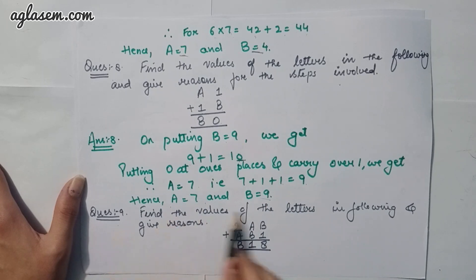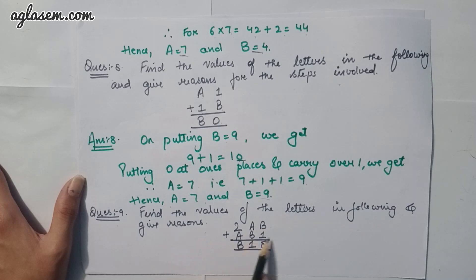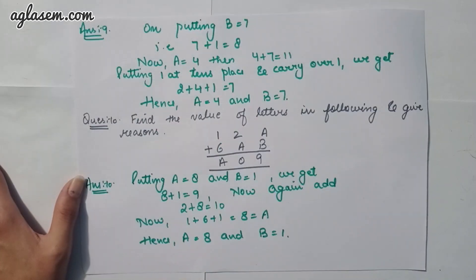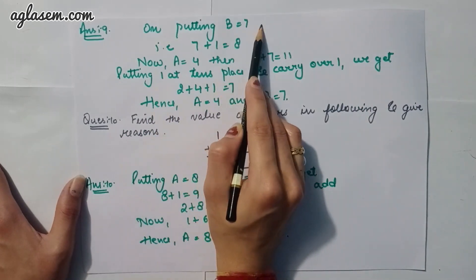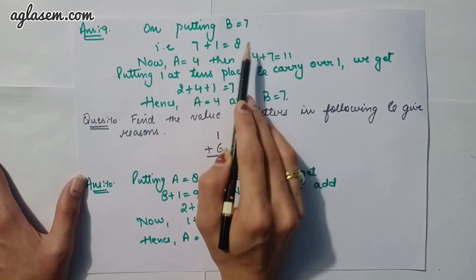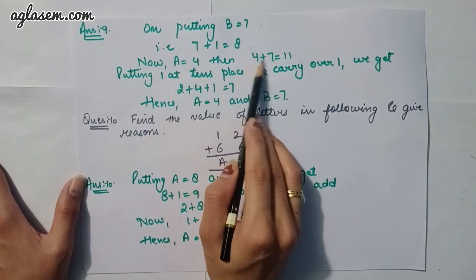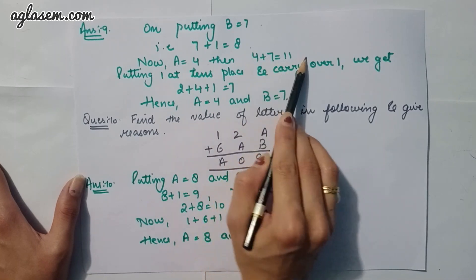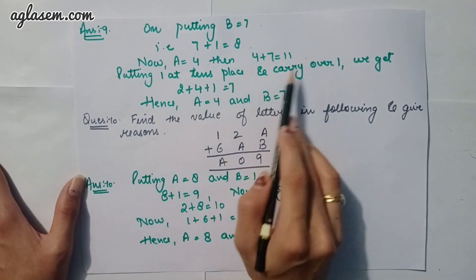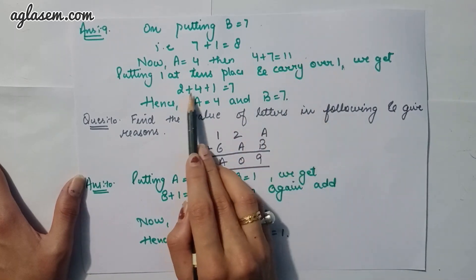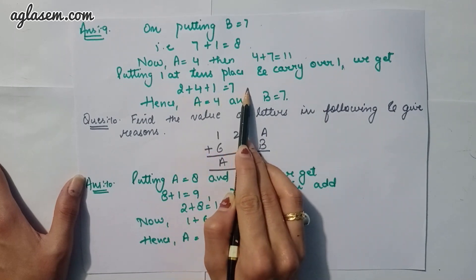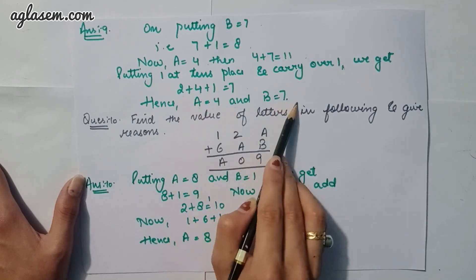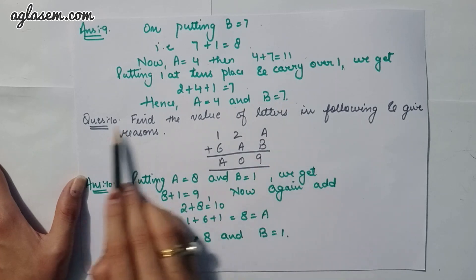Moving to the ninth question: 2AB + AB1 = B18. On putting B = 7: 7 + 1 = 8. Then A = 4, because 4 + 7 = 11, putting 1 at tens place and carry 1. Then 2 + 4 + 1 = 7. Hence A = 4 and B = 7.